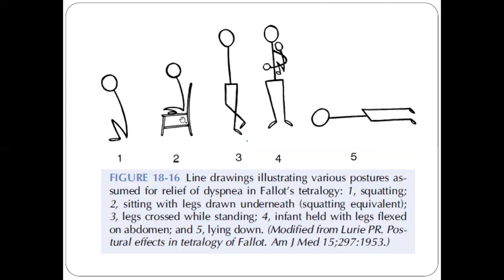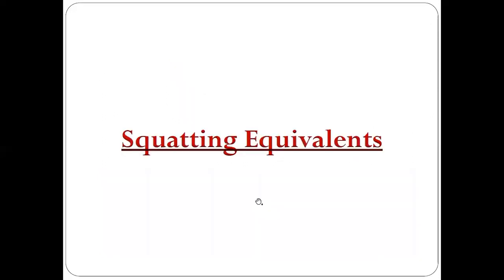The child sits with legs drawn underneath, which also leads to increased peripheral vascular resistance. Another is leg crossing in the standing position, which also increases afterload or peripheral vascular resistance. The infant may be held with legs flexed onto the abdomen, or lying down. All these are squatting equivalents and are helpful in preventing cyanotic spells.